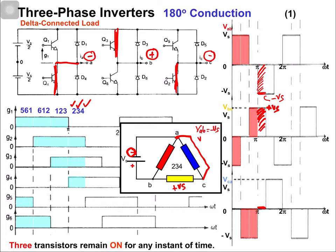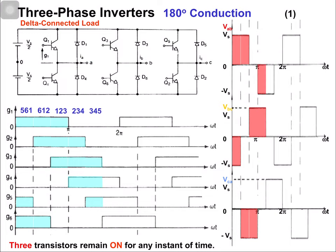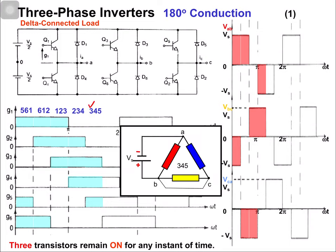Moving to the next switching state — switches 3, 4, and 5 are in the on state. Because of switch 3, phase B is connected with the positive terminal. Because of switch 4, phase A is connected with the negative terminal. Because of switch 5, phase C is connected with the positive terminal. Phase B and C are connected with the positive terminal and phase A with the negative terminal. Therefore, vab = -Vs, vbc = 0, and vca = +Vs. This is the voltage obtained from this state.